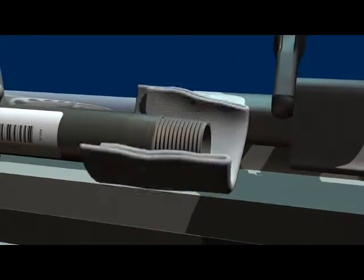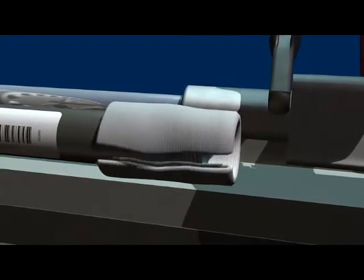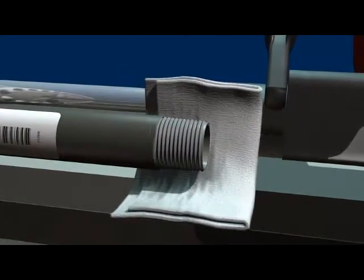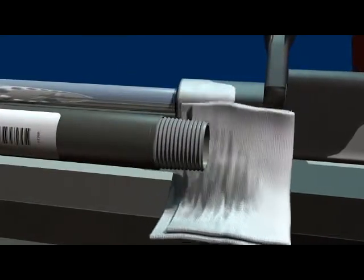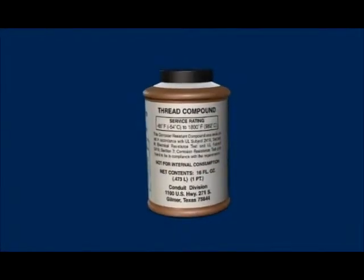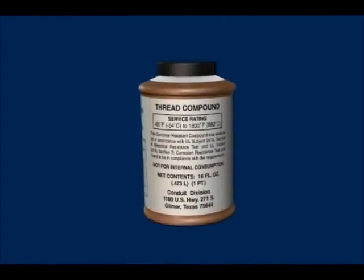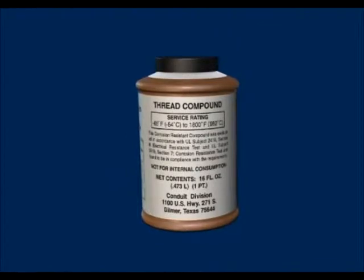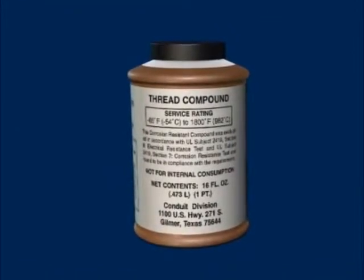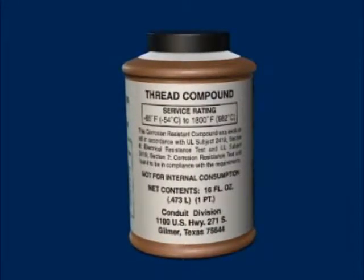Degreasing is important in order to ensure that the thread compound will adhere to the unprotected steel. Bare steel resulting from field cut threads is the most vulnerable area to corrosion in any conduit system. Therefore, thread compound must be used on all field cut threads and internal reams. Proper use of the thread compound will ensure a reliably sealed installation. Thread compound has been developed as a protection for bare metal and is available in pint cans.